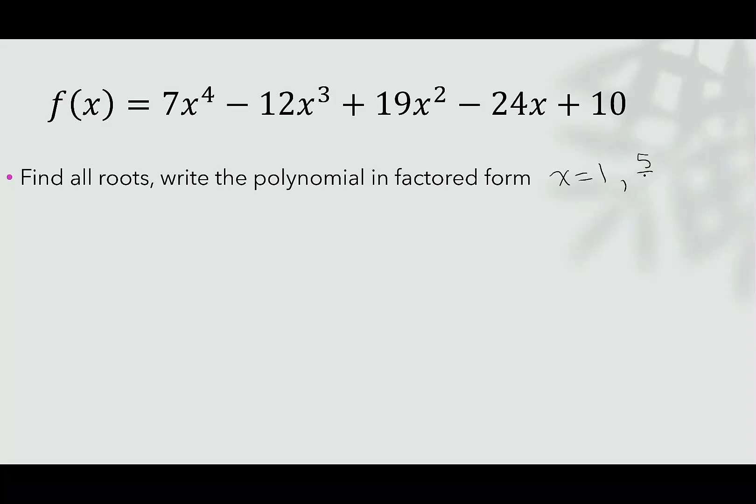So let's write that in. We have x = 1, we have x = 5/7. A polynomial of degree 4 is going to have 4 roots all together. They might be unique, they might be repeated, but we have to find a way to find the other two roots.